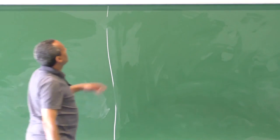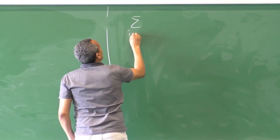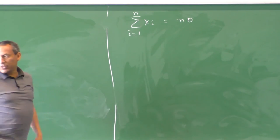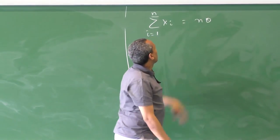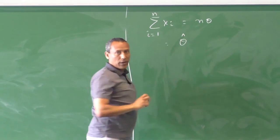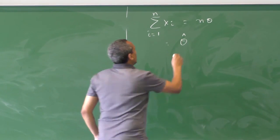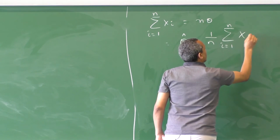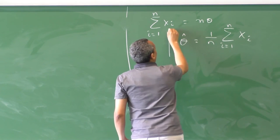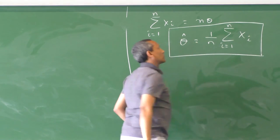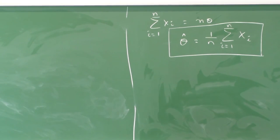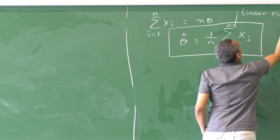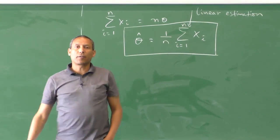From Σᵢ (Sᵢ − θ) = 0, we get Σᵢ Sᵢ = n·θ, because θ is added n times. Therefore, the estimated θ — which is a random variable — is: θ̂ = (1/n) Σᵢ₌₁ⁿ Sᵢ. This is the foundation for linear estimation.